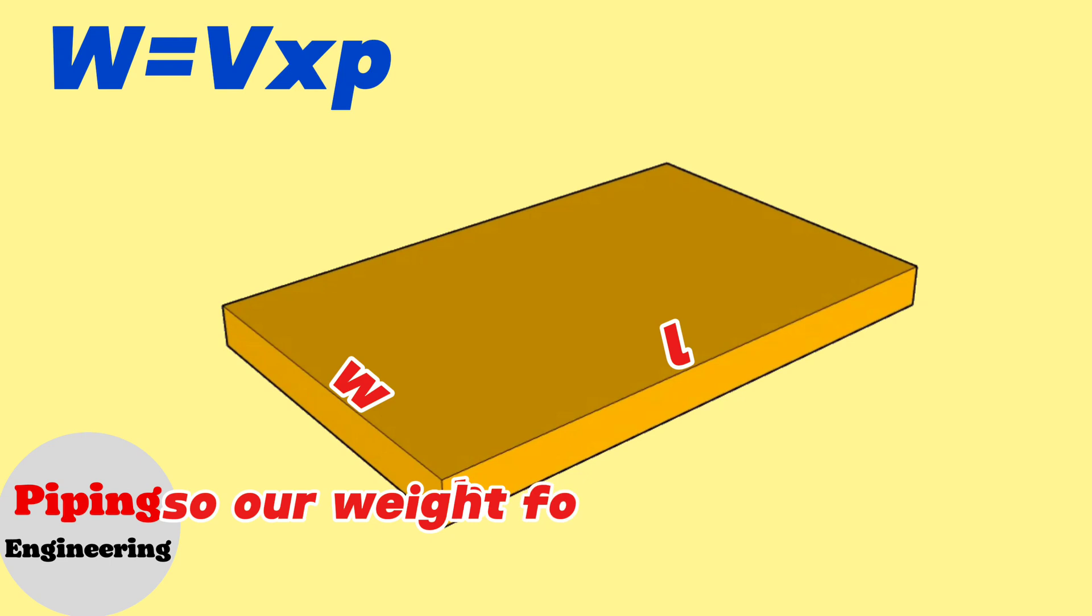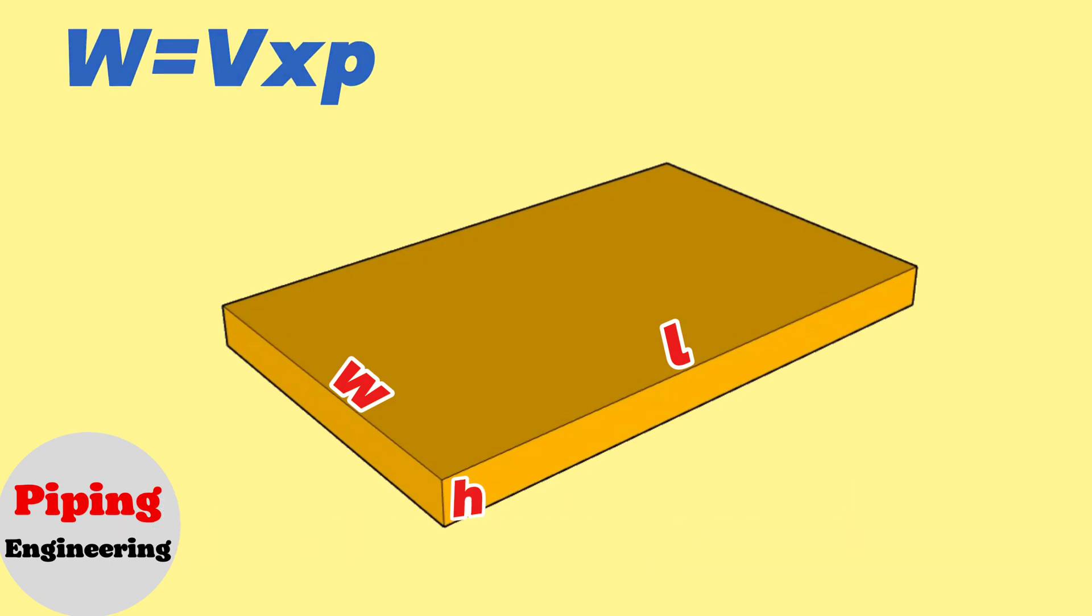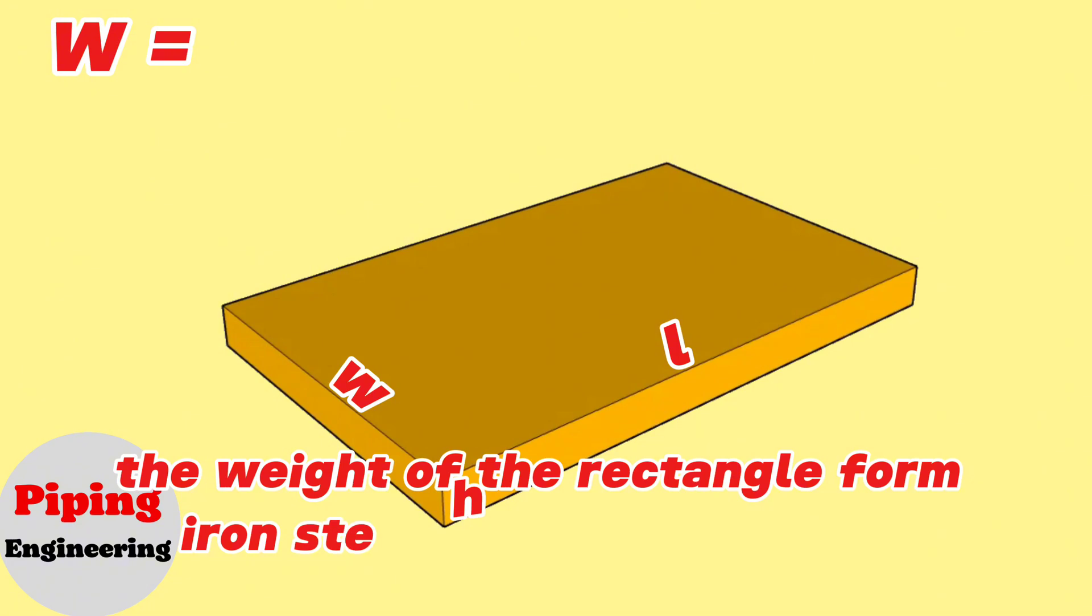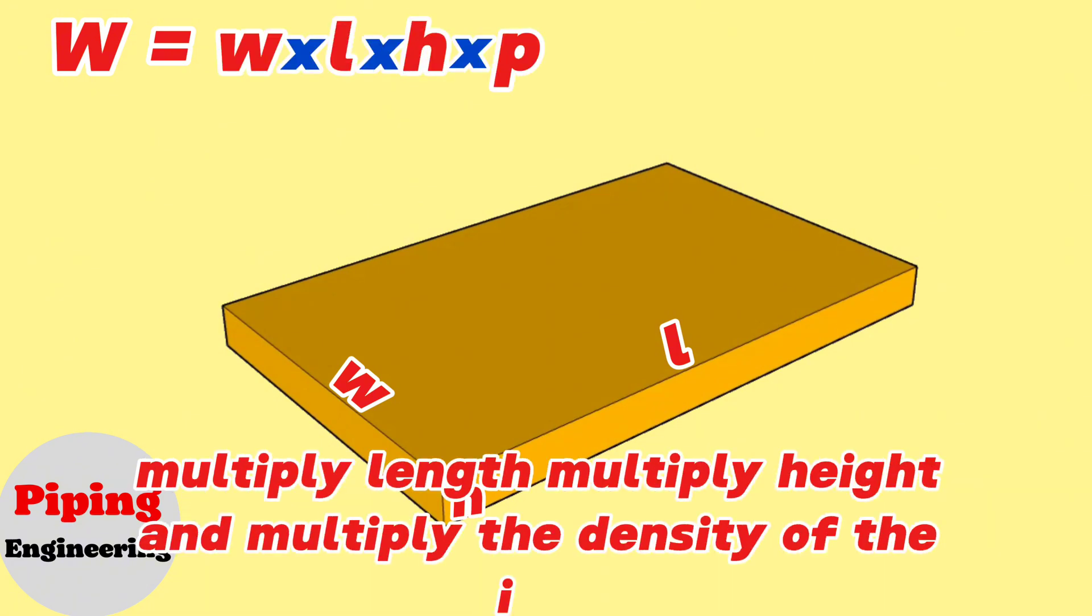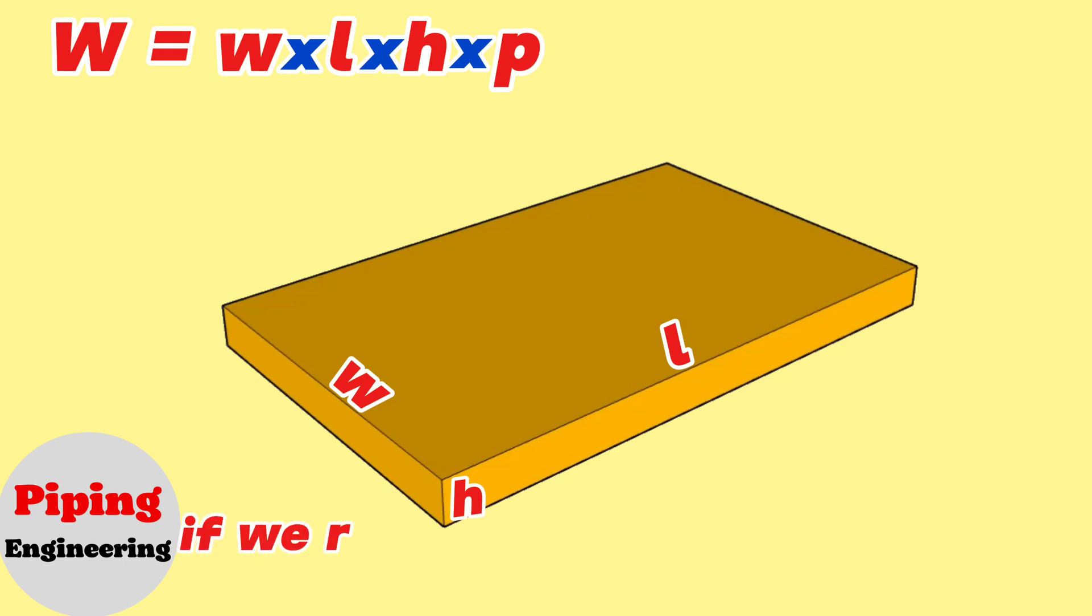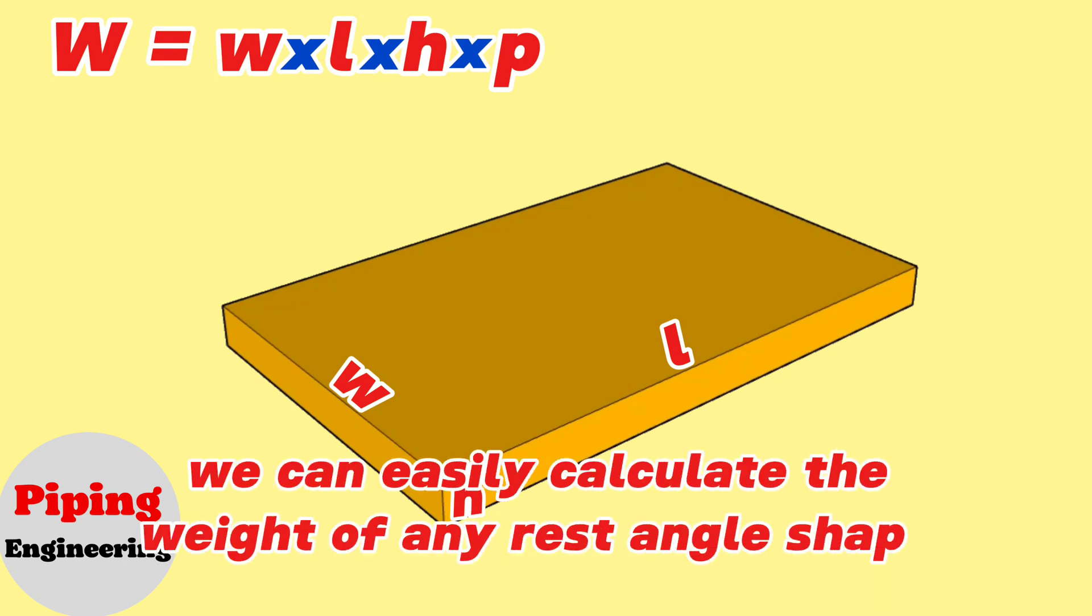The density of the material in this formula is taken from the density chart of the materials. So our weight formula will be updated and finally will be as follows: the weight of the rectangle form iron steel will be equals the width multiply length multiply height and multiply the density of the iron. If we remember this formula, we can easily calculate the weight of any rectangle shaped detail.